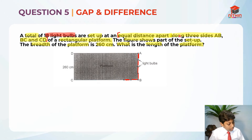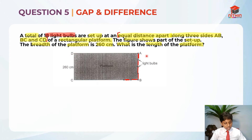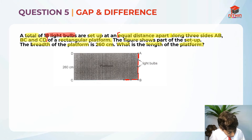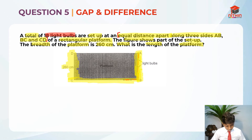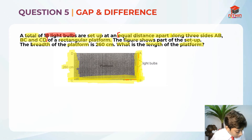They are telling us that 18 light bulbs are only set up along three sides: AB, BC, and CD. Let me highlight those sides on the diagram — this side, this side, and this side. So these are the three sides that the bulbs are set up on.